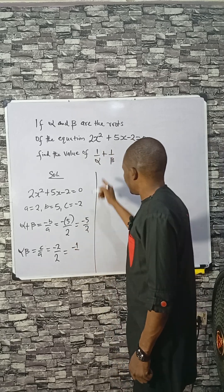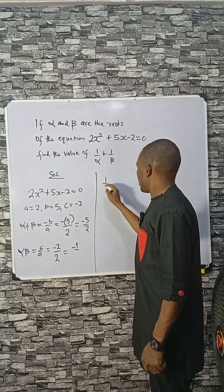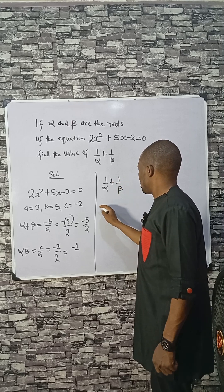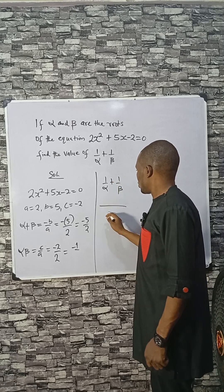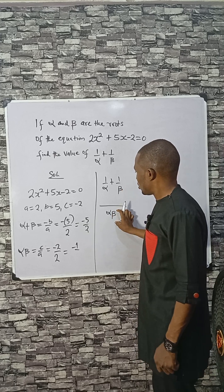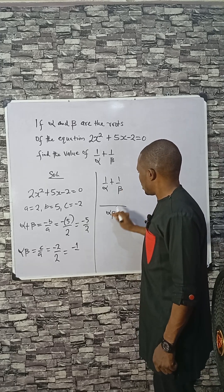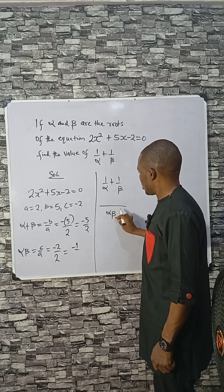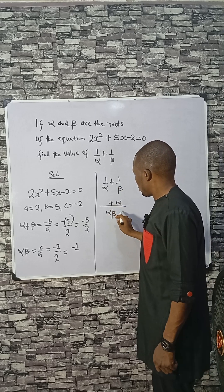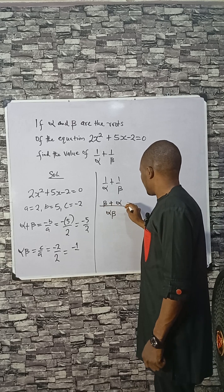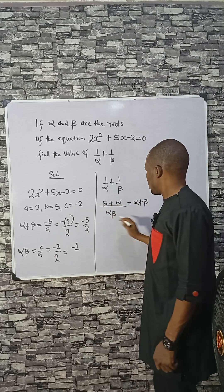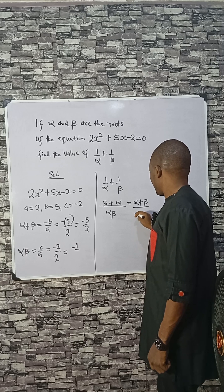So we are asked to evaluate 1 over alpha plus 1 over beta. Find the LCM, which is alpha times beta, and multiply each term by it. What remains is beta plus alpha in the numerator, divided by alpha beta.